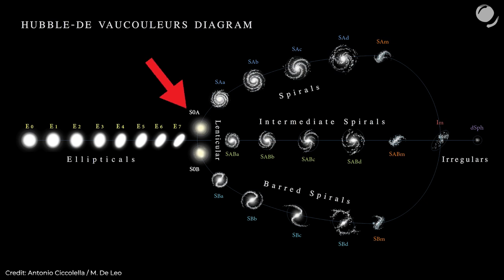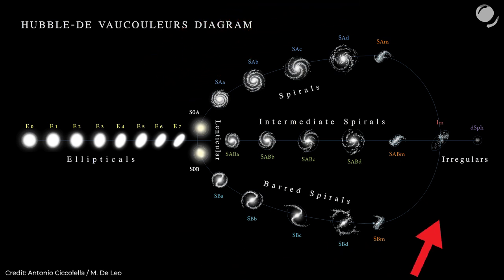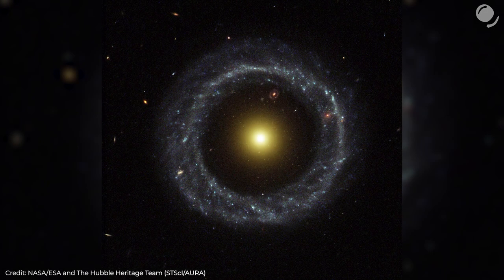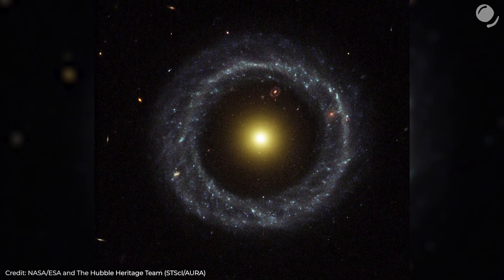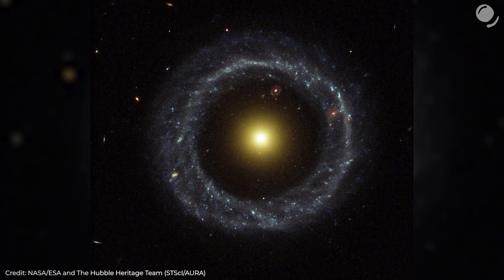In spite of the fact that there are hundreds of billions of galaxies in the observable universe, on a very basic level there are just a few distinct shapes of galaxies: elliptical, lenticular, spiral, barred spiral, and irregular galaxies. Also, there are rare ring galaxies — I've made a separate video on them recently.